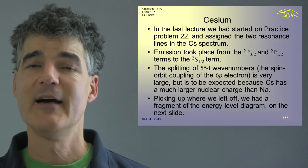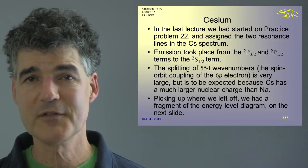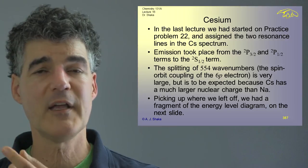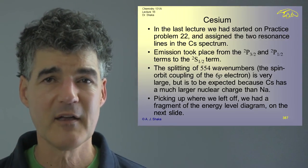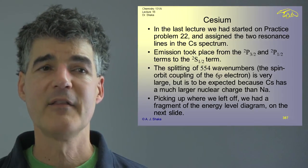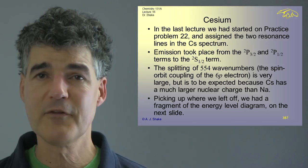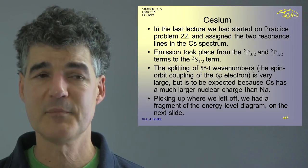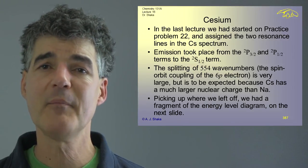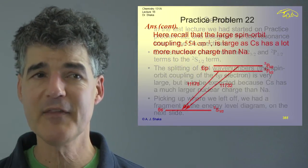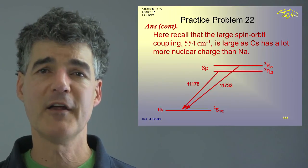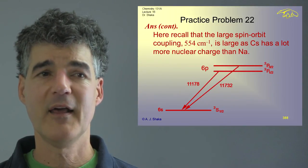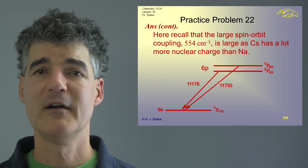Recall that we had assigned the two resonance lines for cesium — those are the two strongest lines in the emission spectrum — which were from doublet P 3/2 and doublet P 1/2 to the ground state, doublet S 1/2. The splitting between the P states was a very large value of 554 wavenumbers, which is the spin-orbit coupling for the 6p electron. We had this fragment of the energy level diagram redrawn on slide 414, with transitions assigned at 11,178 and 11,732.